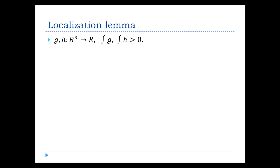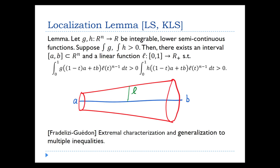So using this lemma, before applying it, let's quickly outline its proof. The functions G and H are not log-concave, they are just lower semi-continuous. But what we produce at the end of this process is a log-concave weighting. So I'll sketch the proof of the lemma itself.